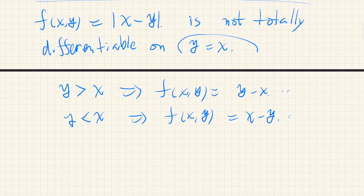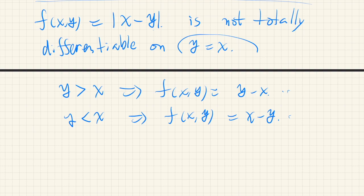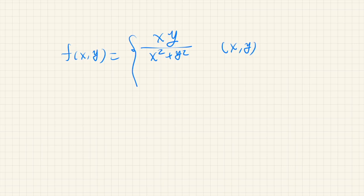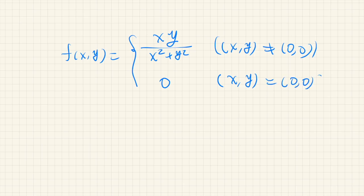That was the case when partial derivatives do not exist. But there are more subtle cases. Consider the function f(x, y) equal to xy over (x squared plus y squared) when (x, y) is not the origin, and equal to zero when (x, y) equals (0, 0).